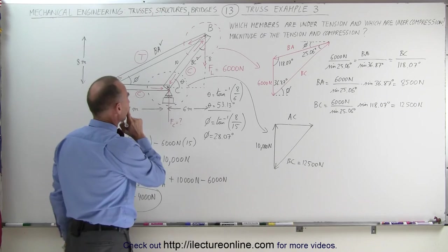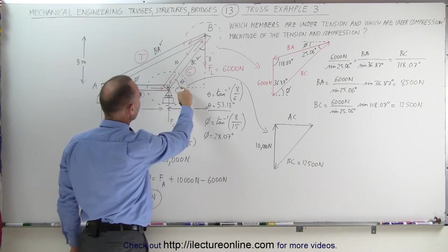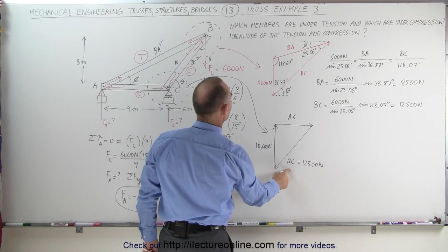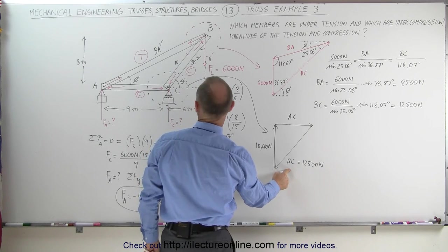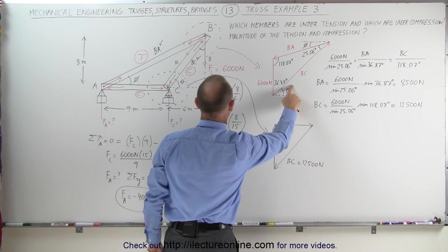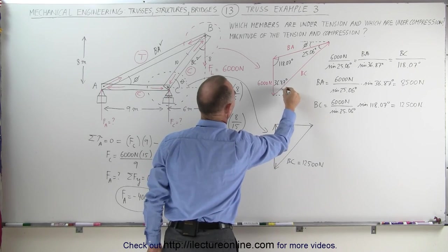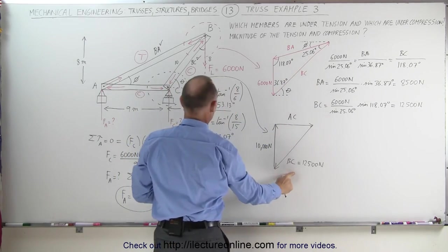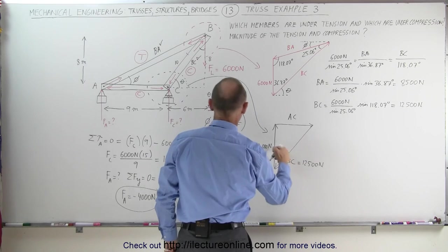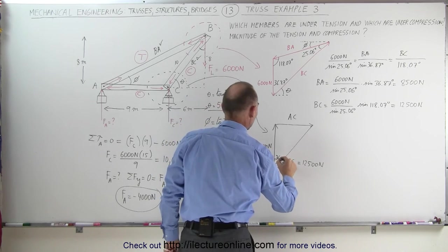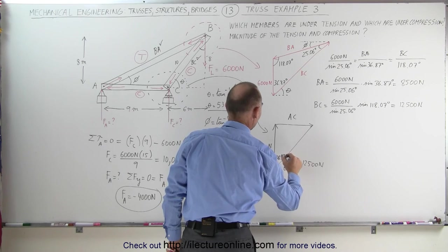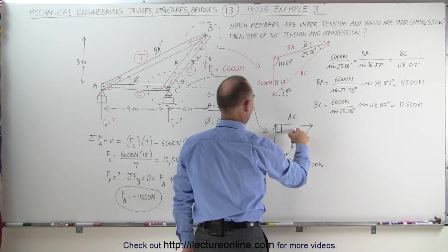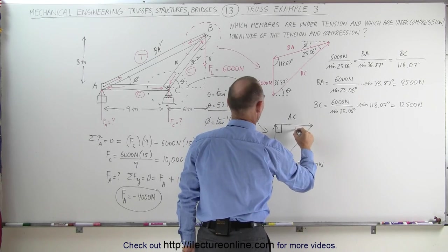Notice that this angle here was equal to theta. Actually, this should have been theta, not phi — this angle is theta. So the internal angle is 36.87 degrees. This is a right triangle, so that angle is 90 degrees, which means the remaining angle is 53.13 degrees.